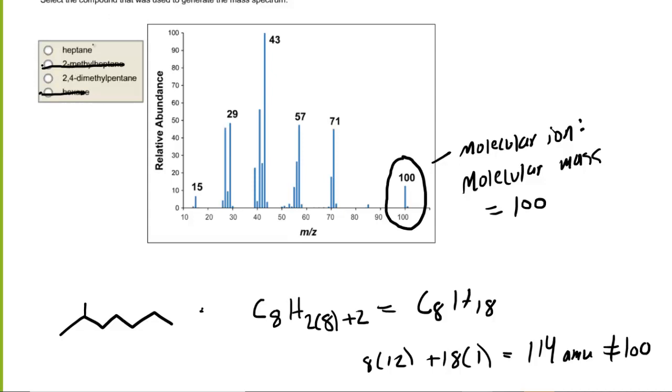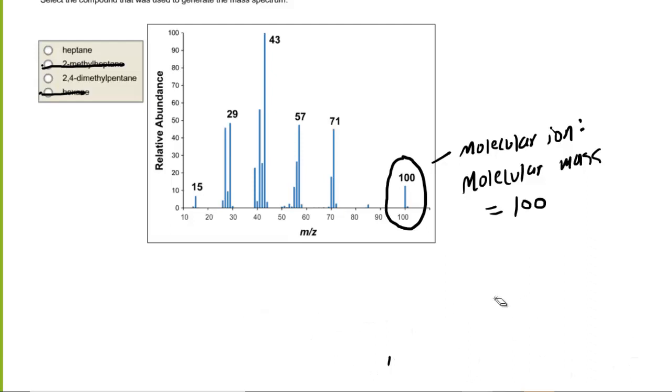Now, we can perform similar exercises for heptane and 2,4-dimethylpentane, and if we were to do so, we would see that each of their masses is 100 atomic mass units. You can verify that for yourself. And so we have to find another way of distinguishing between those two choices.